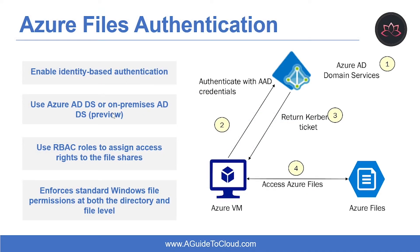Now let's understand Azure files authentication. Azure files support identity-based authentication over Server Message Block (SMB) through on-premises Active Directory Domain Services and Azure Active Directory Domain Services. Azure files enforces authorization on user access at both the share and the directory/file levels. Share-level permission assignment can be performed on Azure Active Directory users or groups managed through the role-based access control model.